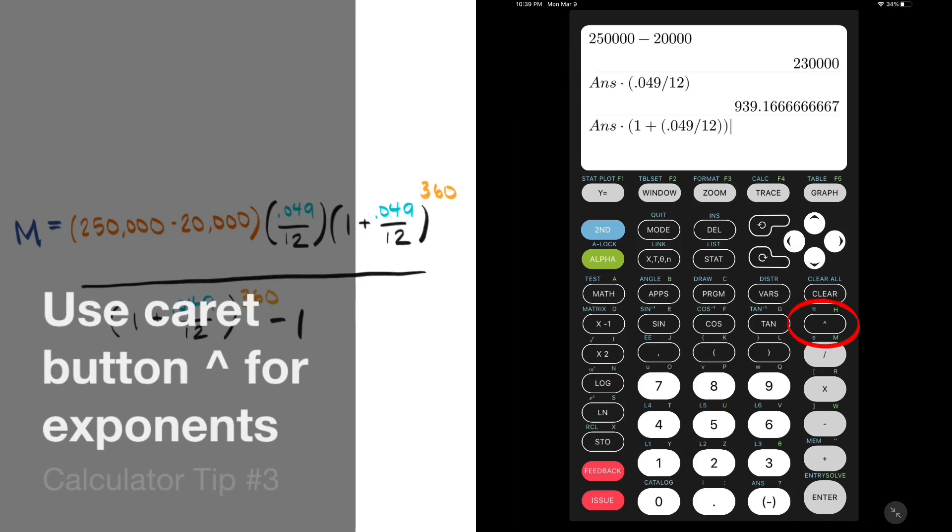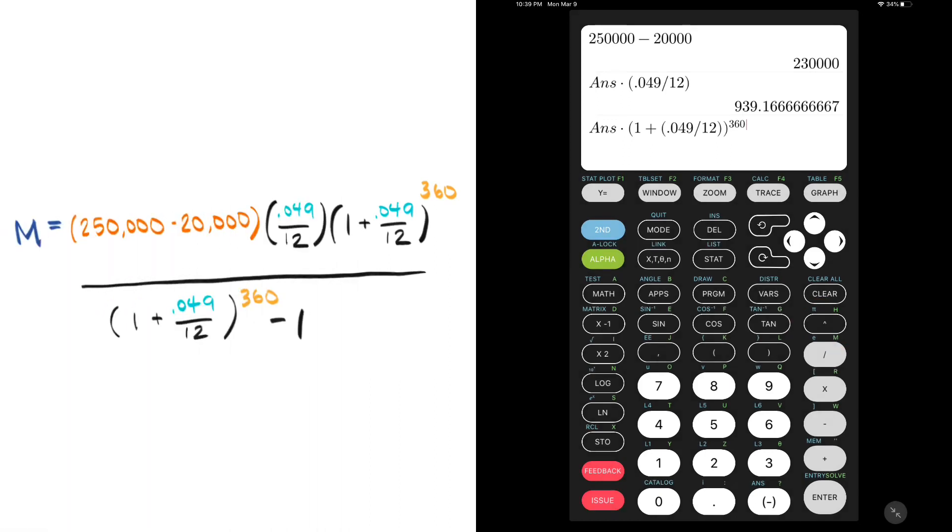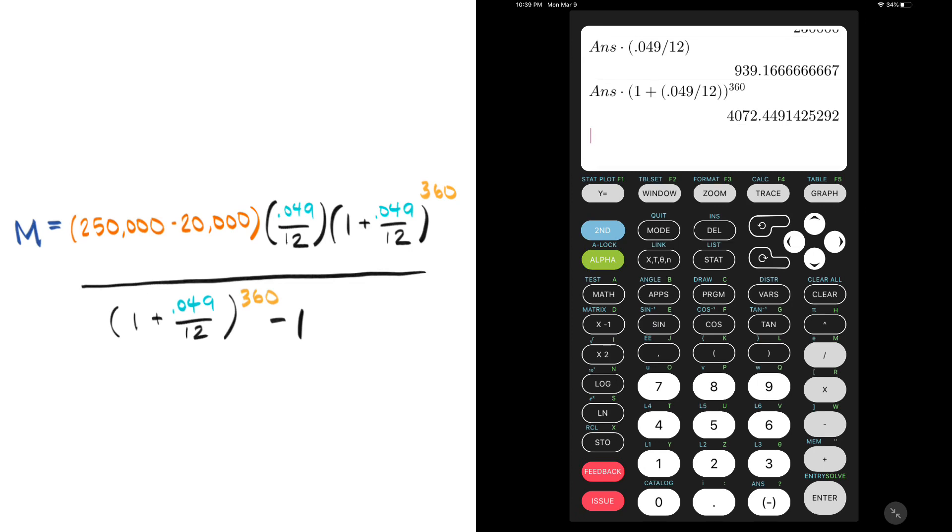We need the value in the parentheses to be taken to the 360th power. That is the entire top part of the fraction, so our numerator is 4072 and some decimals. I'm not going to round any decimals yet before calculating the denominator since I've got the power of the answer function.